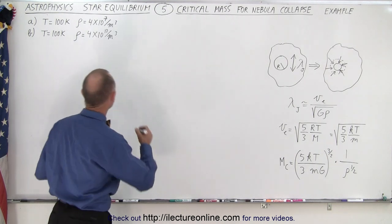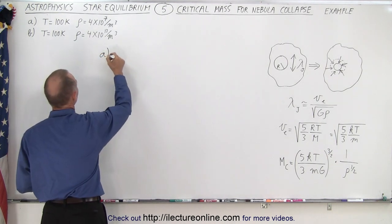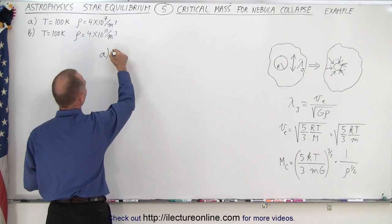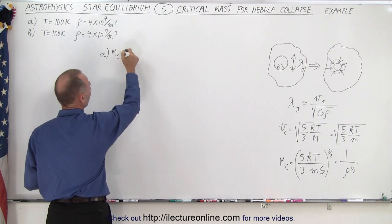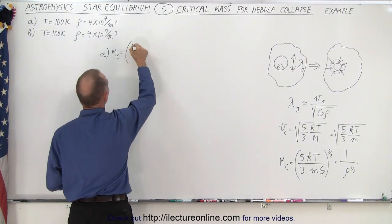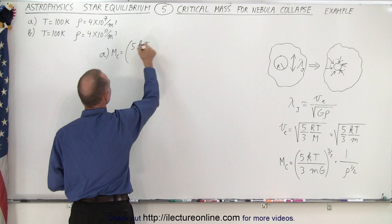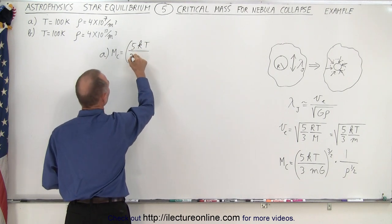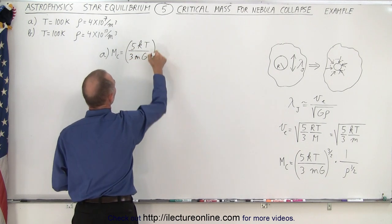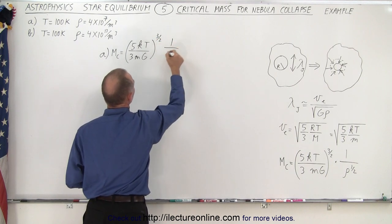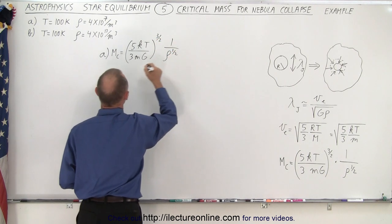All right so let's do our example A. We have the critical mass is equal to the quantity 5 kT divided by 3 mg to the 3 halves power times 1 over the density to the 1 half power.